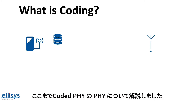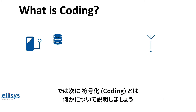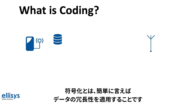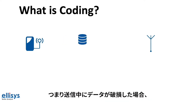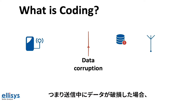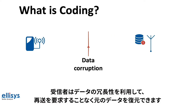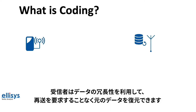Now that we've talked about the PHY part in Coded PHY, let's talk about what "coded" means. Coding is, in simple terms, applying data redundancy to allow data recovery at the receiver without the need for retransmissions. So in a scenario where data gets corrupted during transmission, the receiver can utilize the data redundancy to recover the original data without having to request a retransmission.